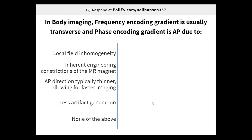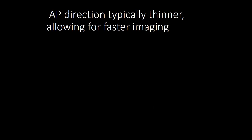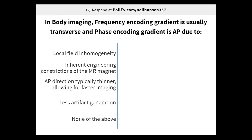Question: in body imaging, frequency encoding gradients are usually in the transverse and phase encoding gradients are in the AP direction due to which of the following? The correct answer is the AP direction is typically thinner, allowing for faster imaging. The slice and frequency encoding gradients are time neutral because we're doing other things while they're on. But the phase encoding gradient is on all by itself, so it takes a lot of time. Using the thinnest direction — typically AP — makes it the least time-constraining direction to measure.